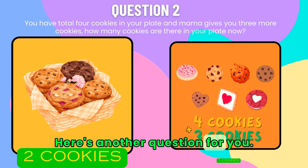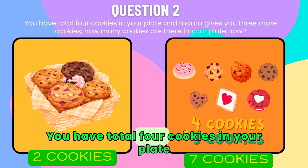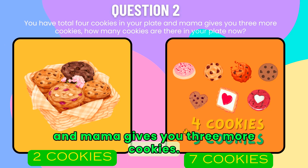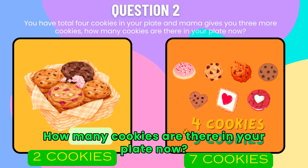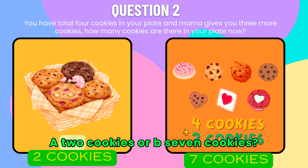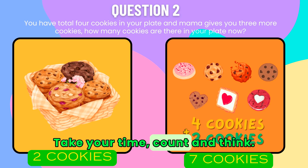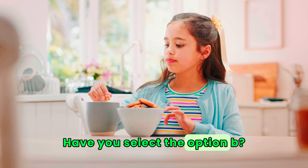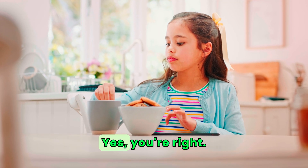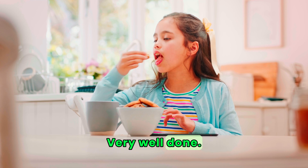Here's another question for you. You have four cookies on your plate, and Mama gives you three more cookies. How many cookies are there on your plate now? A. Two cookies, or B. Seven cookies? Take your time, count and think. Have you selected option B? Yes? You're right — very well done!